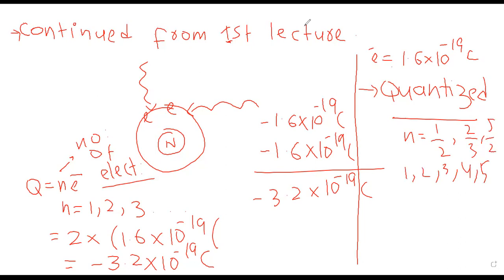The charge we get is always quantized. This is called the quantization of charge, and this is also a property of electric charge. Again repeating: if you have to find the total electric charge in any material, the formula is Q = ne, where n is the number of electrons gained or lost through an atom. The total electronic charge equals n × e, where n represents the number of electrons and e represents the electronic charge.